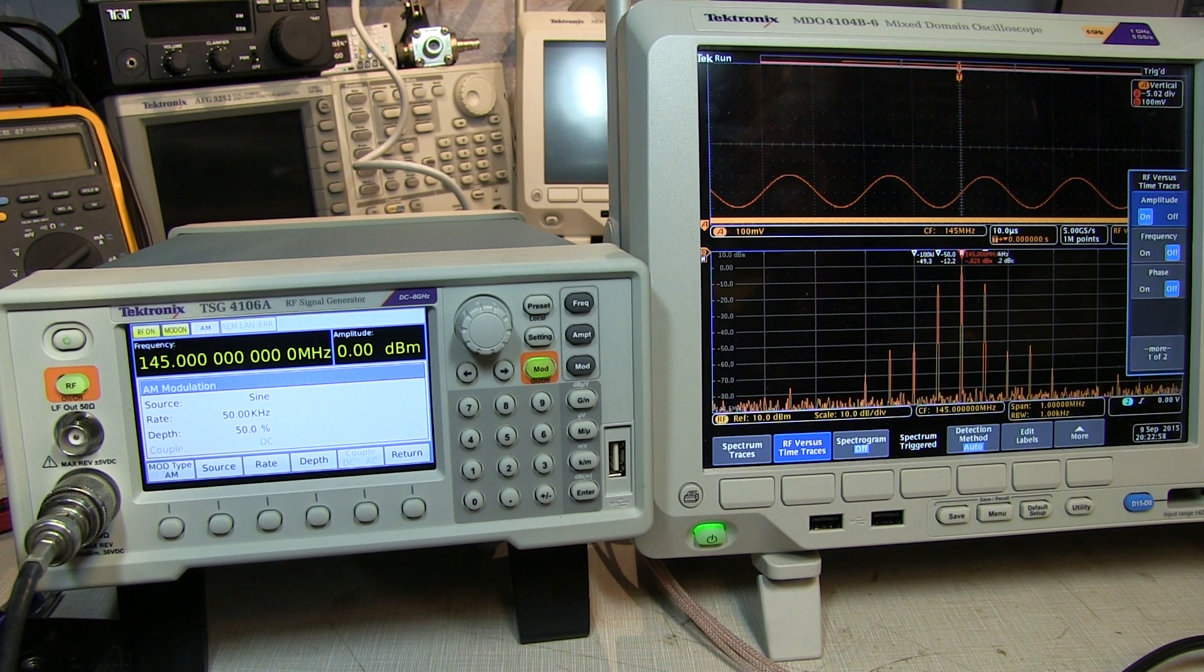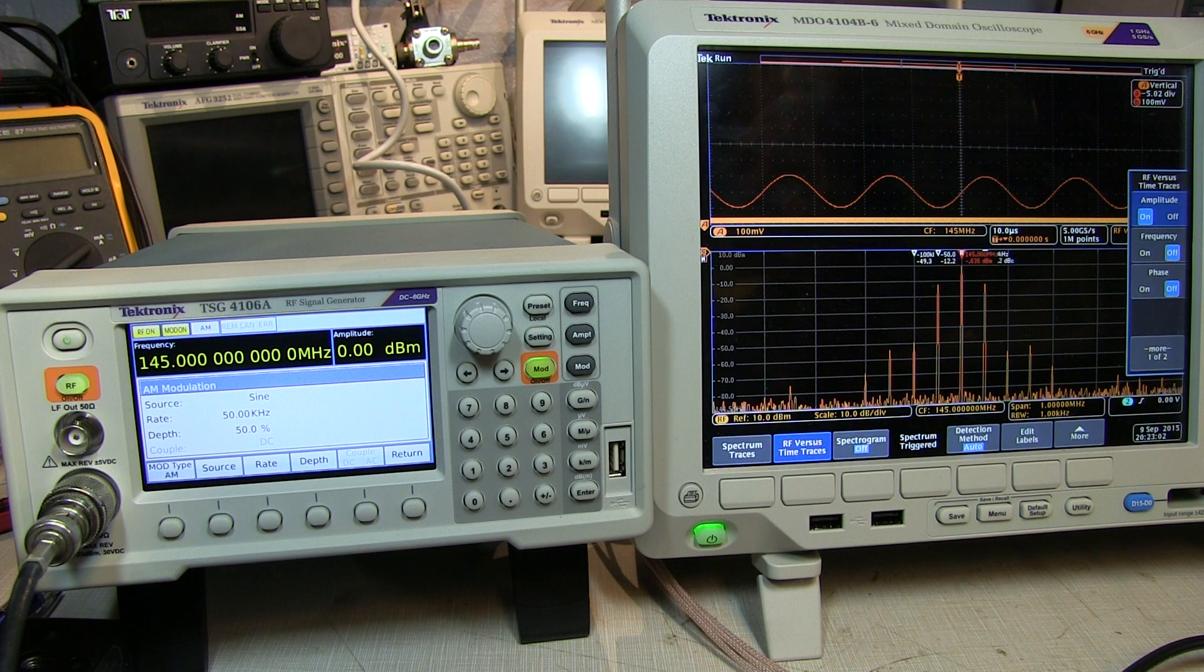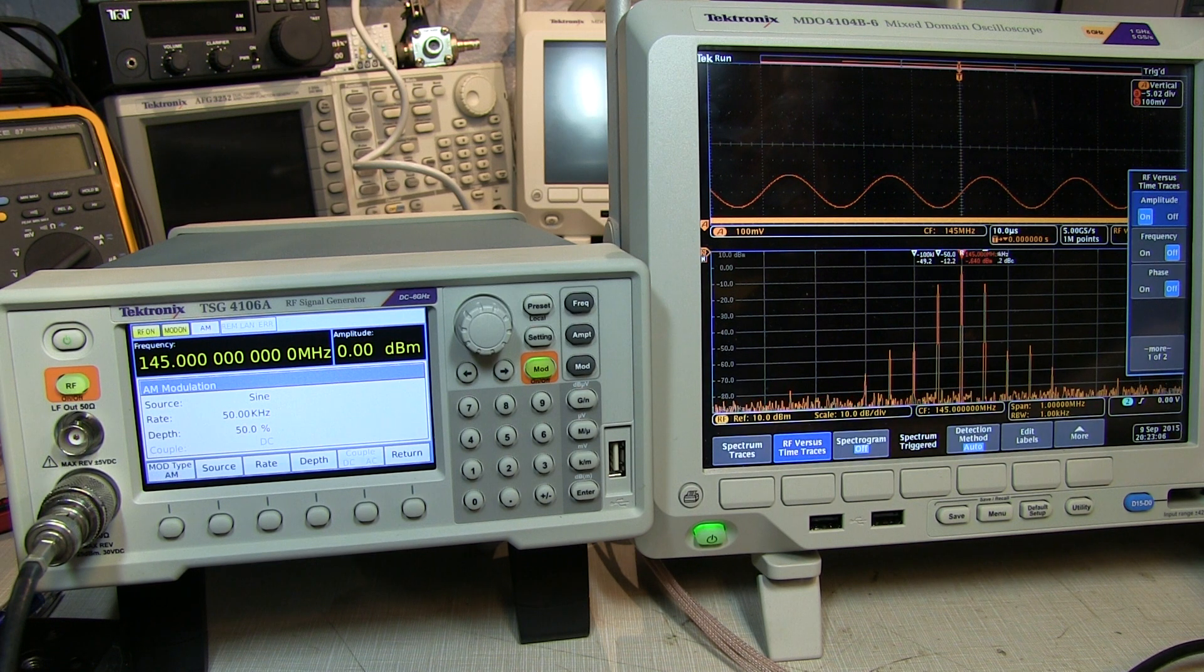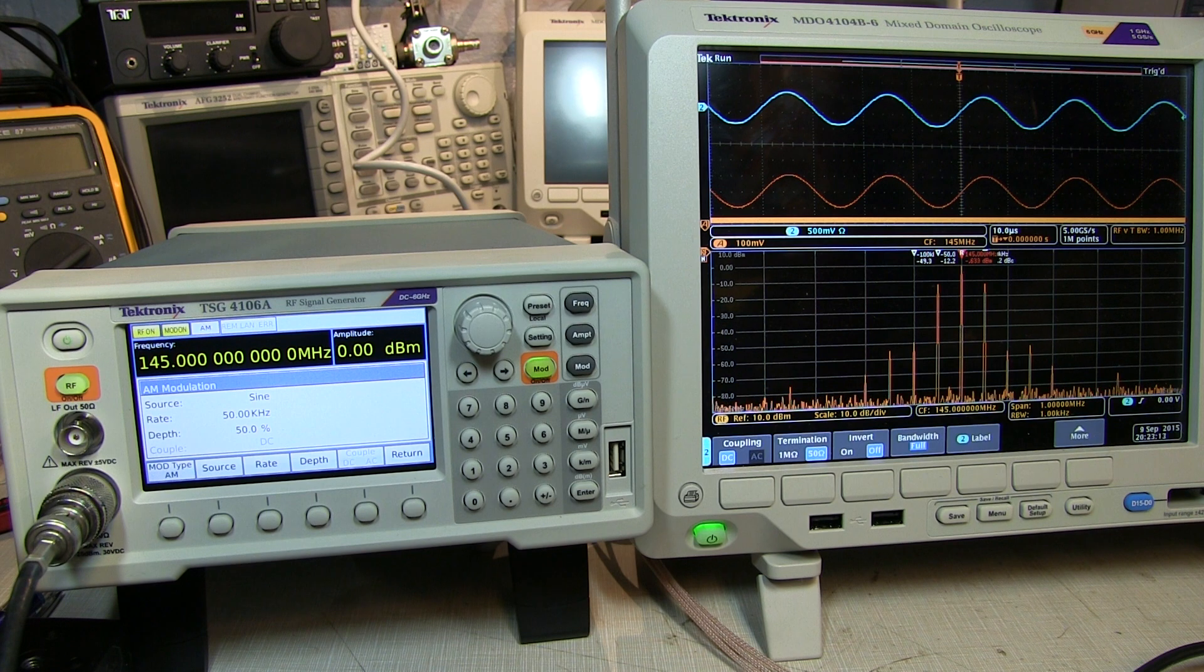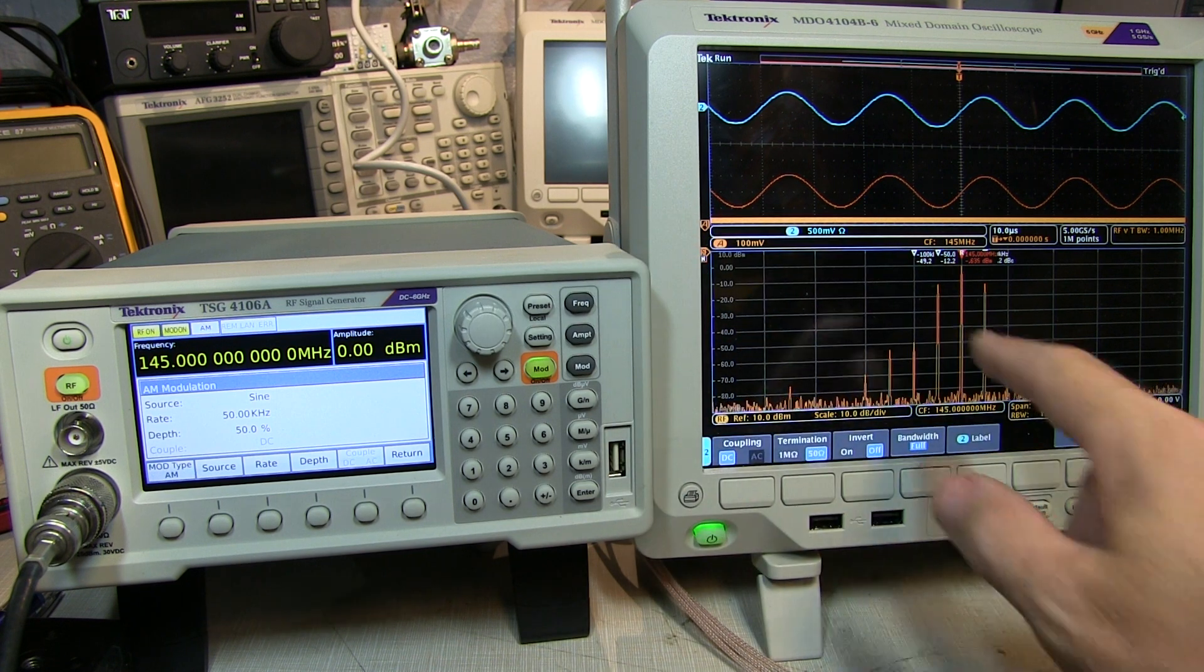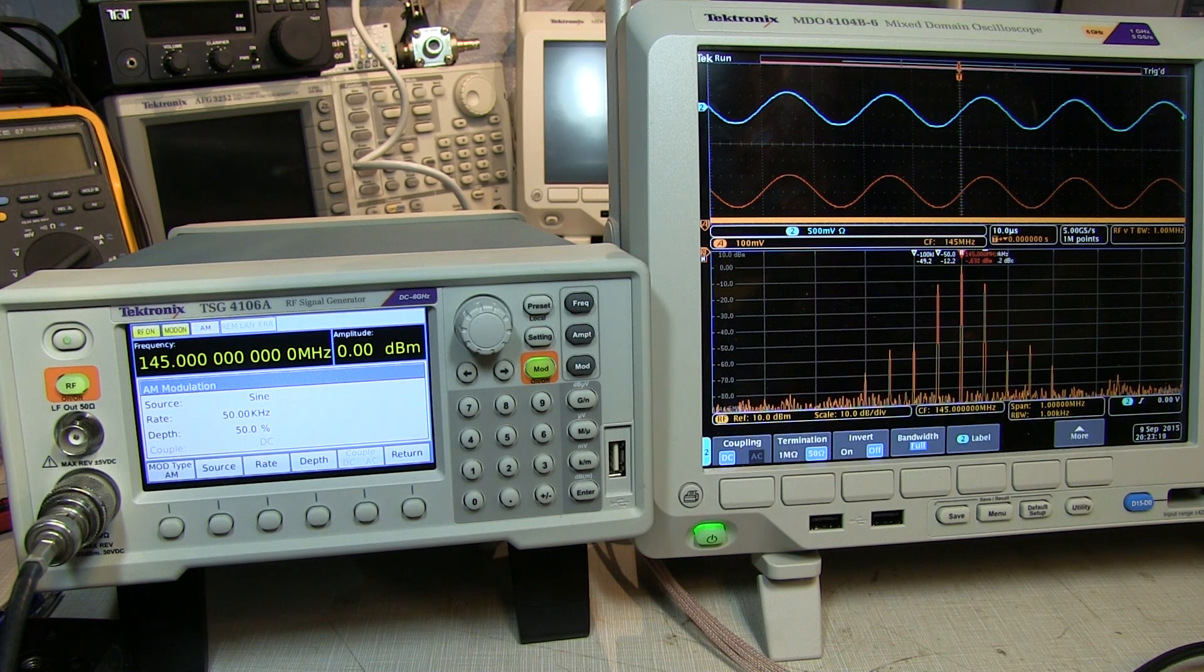Now, one of the outputs that was available on the rear panel was the analog modulation out, or the baseband output. I've got that tied into channel 2 on the scope here. So if we turn that on, there we can actually see that's the actual baseband signal being generated by the signal generator that's being used to modulate the signal for this AM modulation.